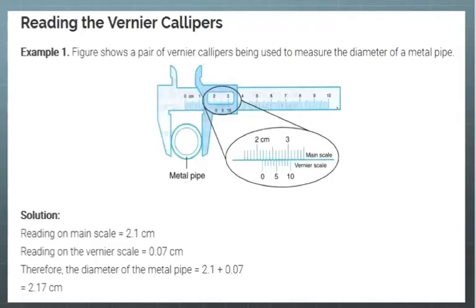How to measure the diameter using vernier caliper? This figure shows a pair of vernier calipers being used to measure the diameter of a metal pipe. Reading on the main scale is 2.1 cm. Reading on the vernier scale is 0.07 cm. Therefore, the diameter of the metal pipe is 2.1 plus 0.07 which is equal to 2.17 cm.